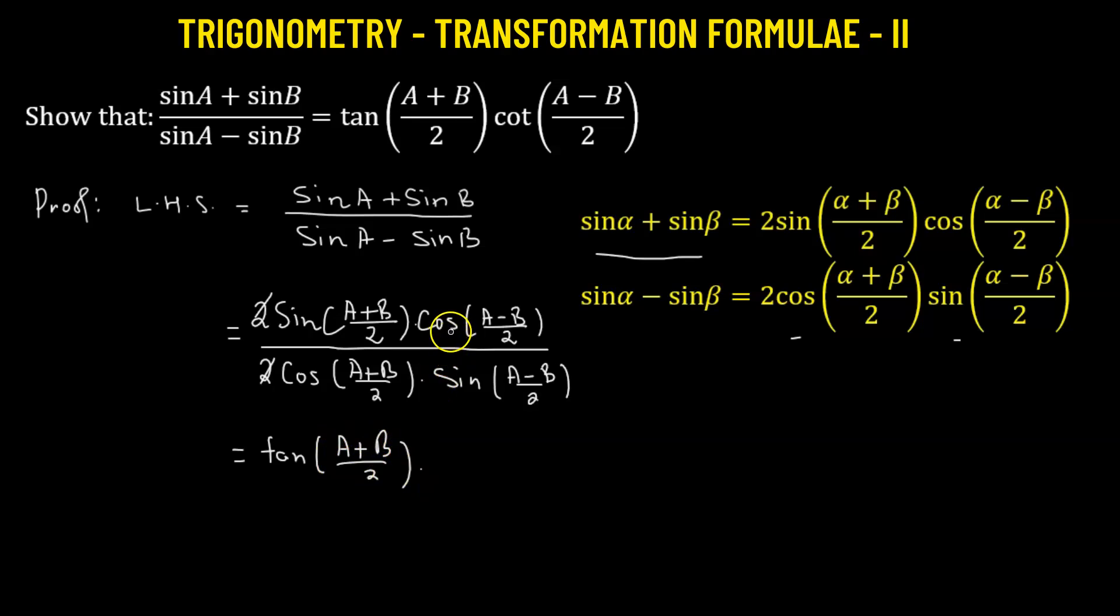And then we have the other ratio of cosine to that of sine, and both of them have the same angle. Now the ratio is simply the cotangent function. So we have cotangent of a minus b over two.